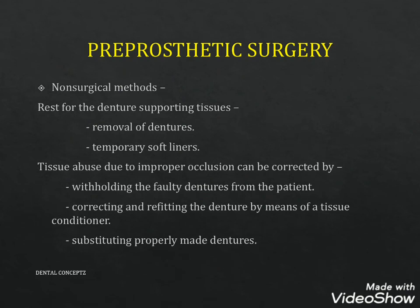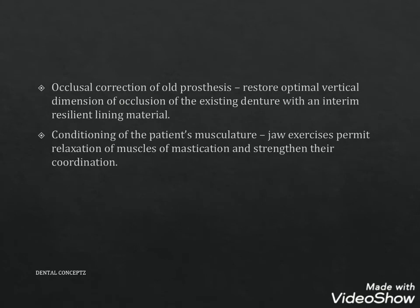Pre-prosthetic surgery includes non-surgical and surgical methods. Non-surgical methods include rest for the denture-supporting tissues by removal of dentures or applying temporary soft liners. Tissue abuse due to improper occlusion can be corrected by withholding faulty dentures and correcting and refitting them using tissue conditioners or properly made dentures. Occlusal correction of old prosthesis restores optimal vertical dimension of occlusion using an interim resilient lining material. Conditioning of the patient's musculature includes jaw exercises to permit relaxation of masticatory muscles and strengthen their coordination.